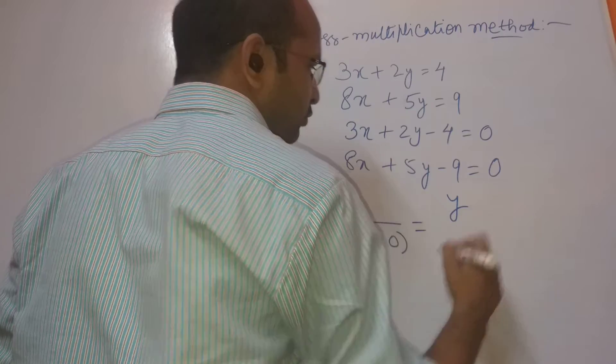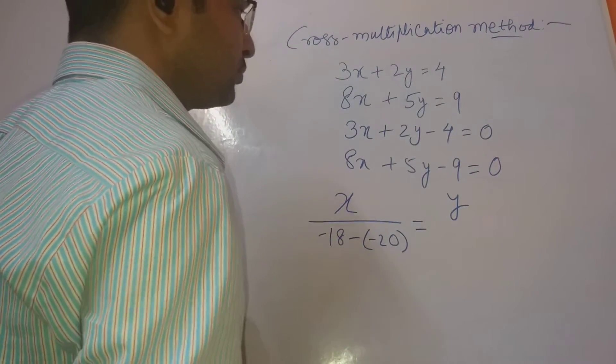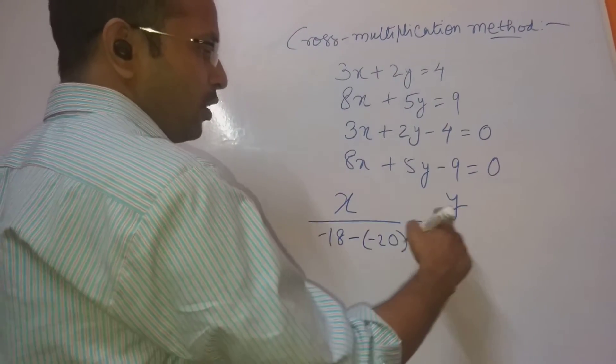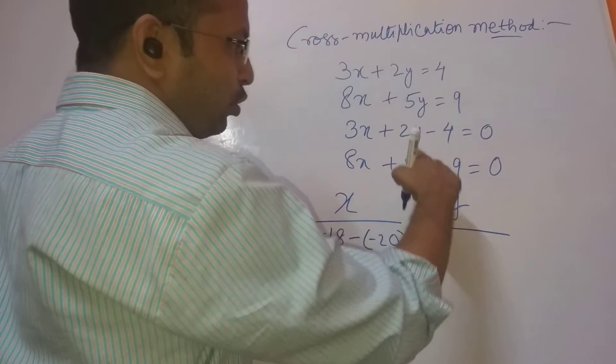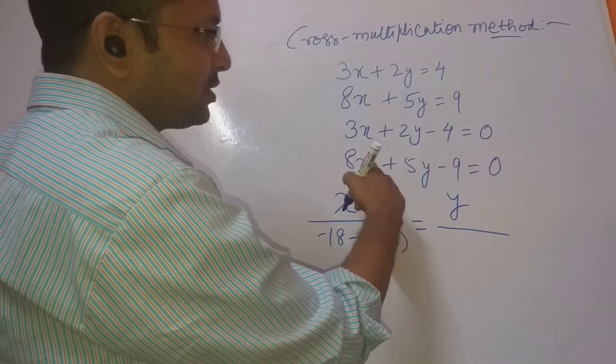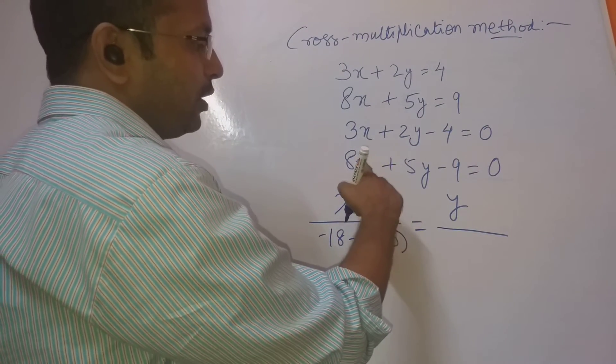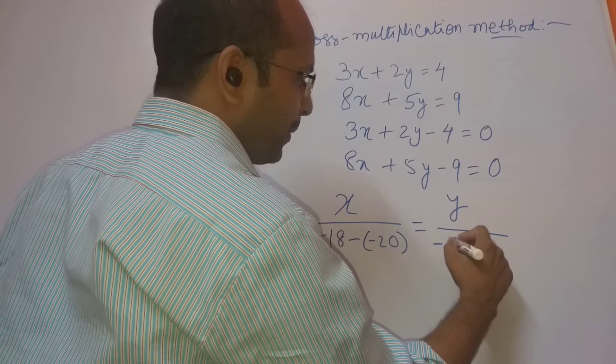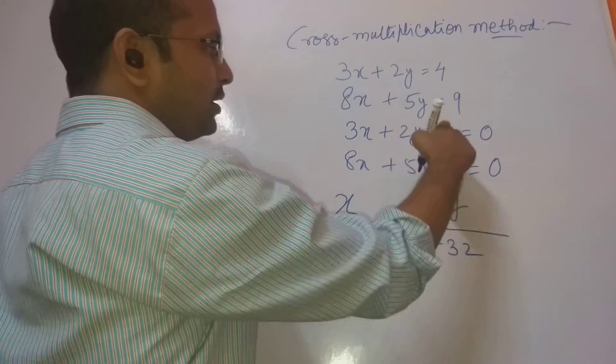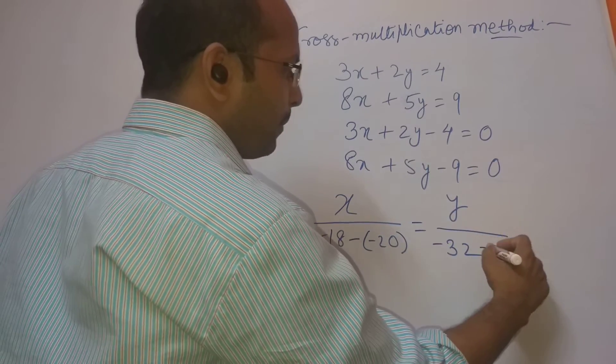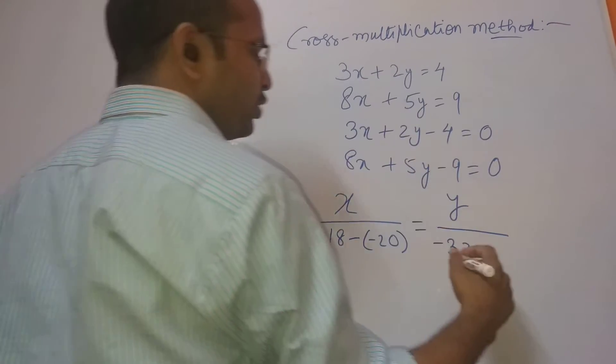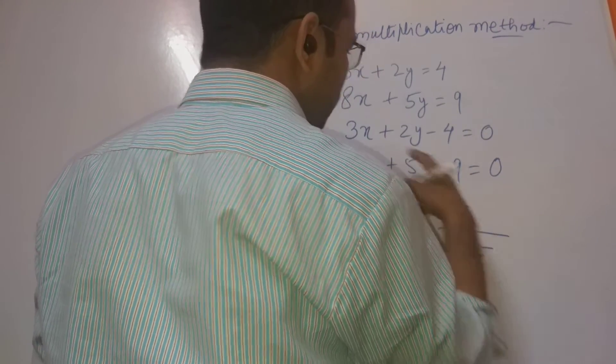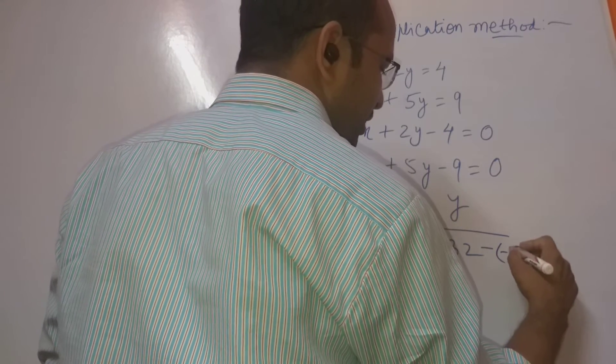You have to take y now. When you are taking y, you have to close y and then do the reverse thing. 8 into minus 4 is minus 32. This minus this, minus of 3 into minus 9, which is minus 27.